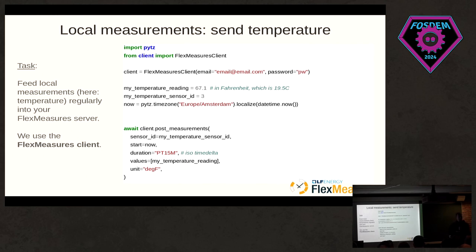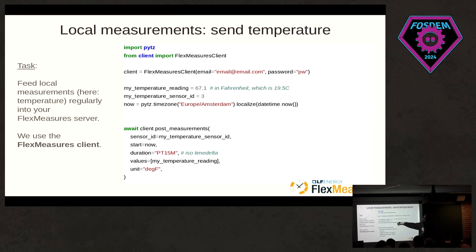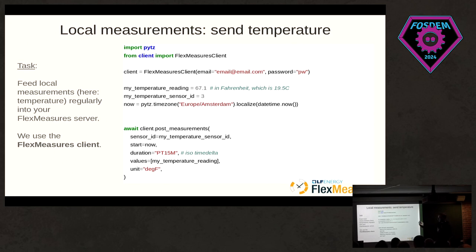Next step: let's say we measure the temperature locally with your own sensor, and you want the temperature data to end up in FlexMeasures as well. Here's a small example of how to use the FlexMeasures client — it provides nice code to work with easily, but it actually uses the FlexMeasures API in the background. For fun, we had the temperature reading in Fahrenheit, which we declare when sending it to FlexMeasures. FlexMeasures knows the data is to be stored in Celsius and will automatically convert it. You'd do this regularly from a local script running on your Raspberry Pi.